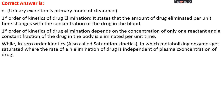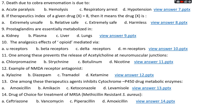There are two orders of kinetics of drug elimination: first order and zero order. In first order kinetics, the amount of drug eliminated per unit time changes with the concentration of the drug in blood — when concentration is high, excretion is also high. A constant fraction of drug is eliminated per unit time. In zero order kinetics, also known as saturation kinetics, metabolizing enzymes become saturated and the rate of elimination is independent of plasma concentration.